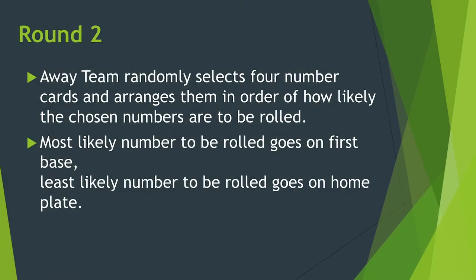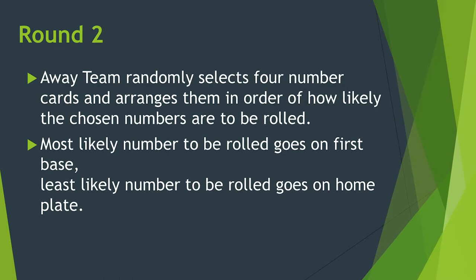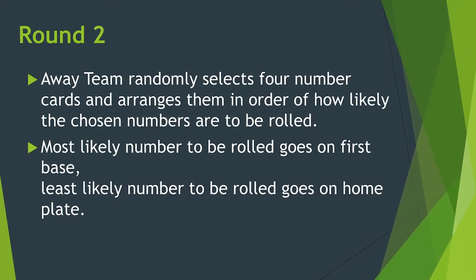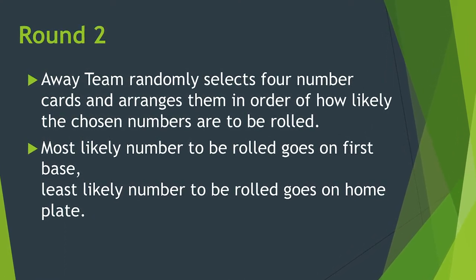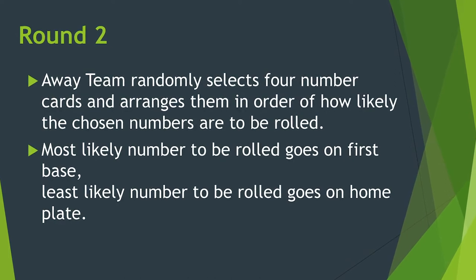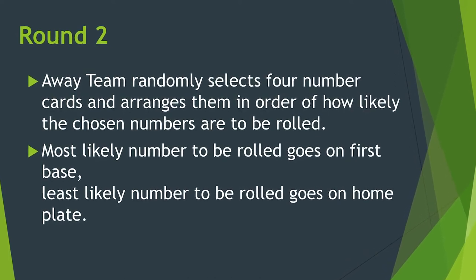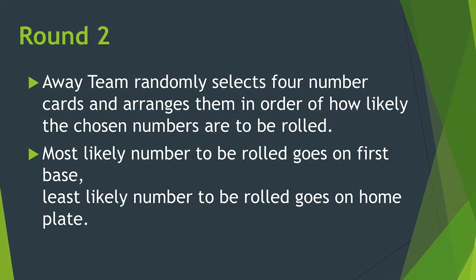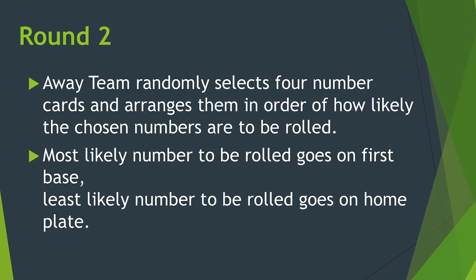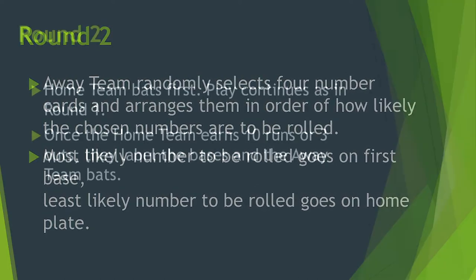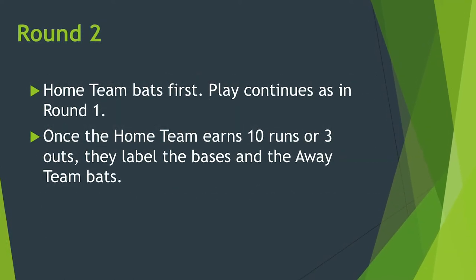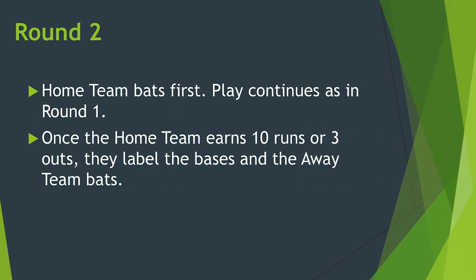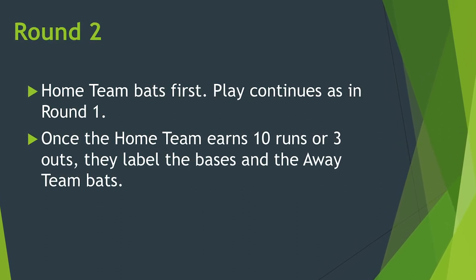Round two begins with the away team randomly selecting four number cards again. This time the bases are labeled in order of how likely the numbers chosen are to be rolled. First base will be labeled with the most likely number to be rolled and home base with the least likely number to be rolled. Play continues as in round one. Round two ends when the away team earns ten runs or its third out.